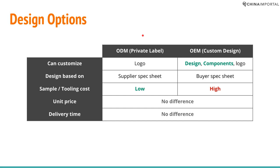With ODM, you can request quotations and get a spec sheet from the supplier. This means you don't customize the design — you can customize the logo, maybe the packaging, but not the components. This is the fast track: no product development, no prototypes.